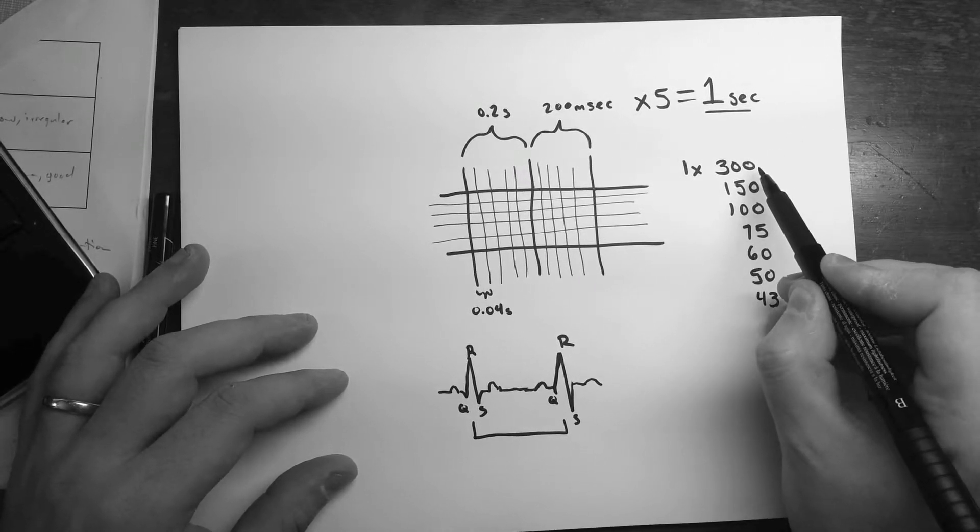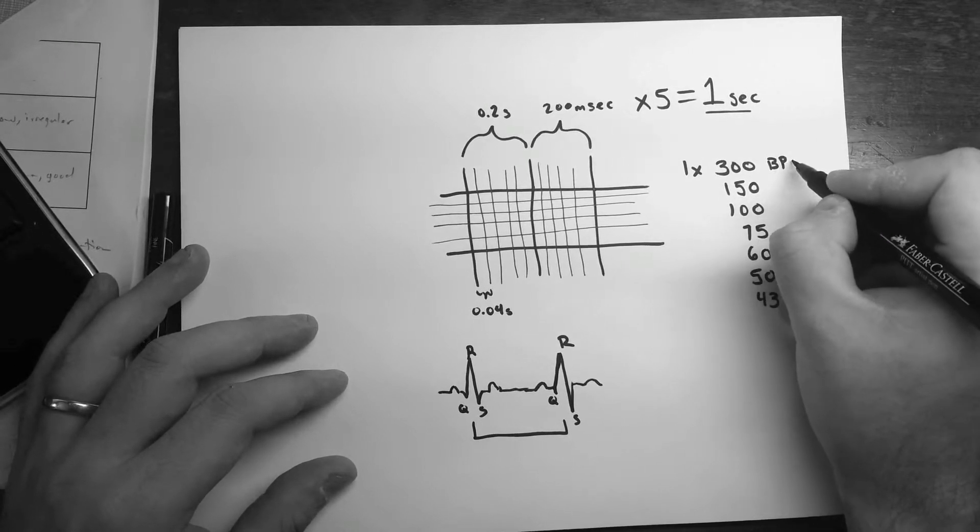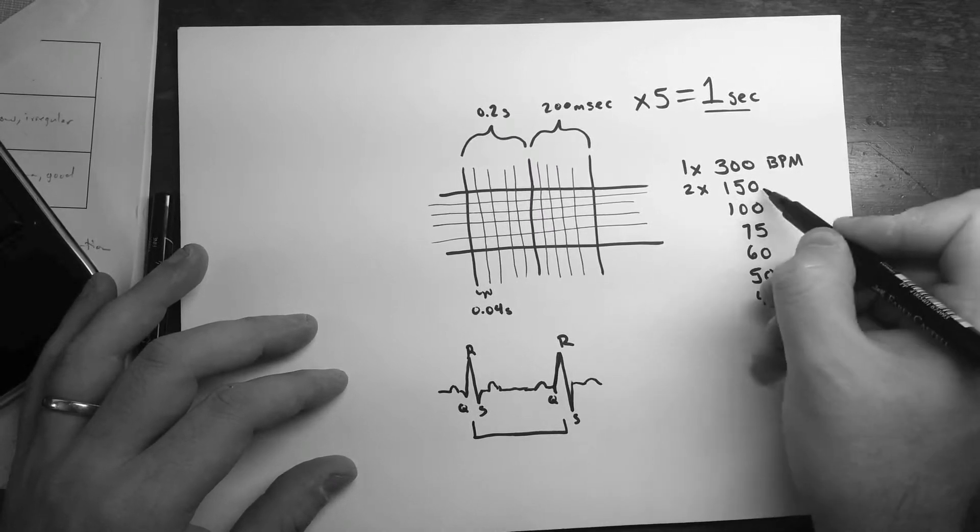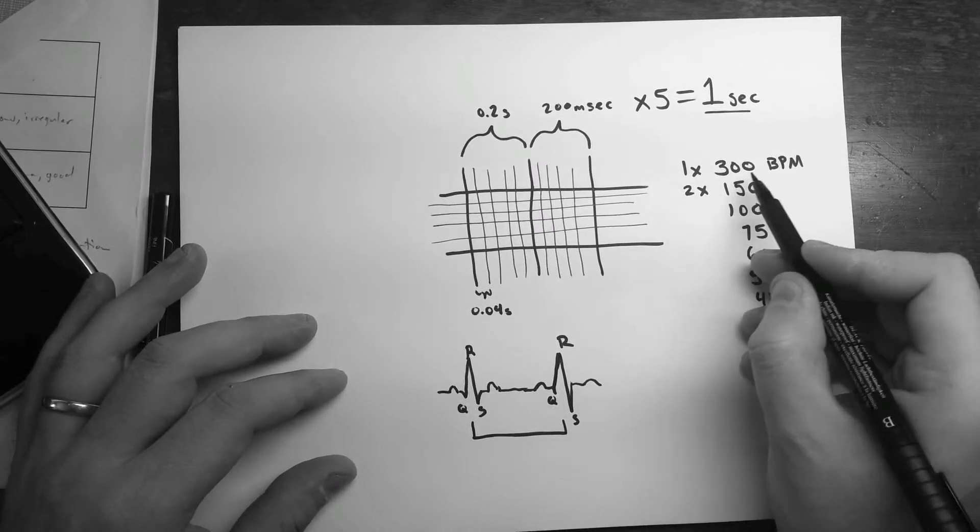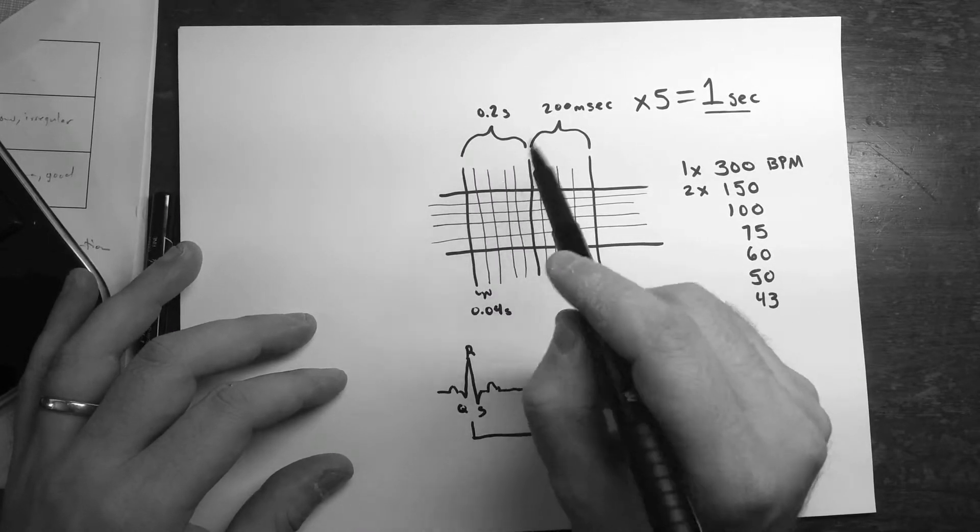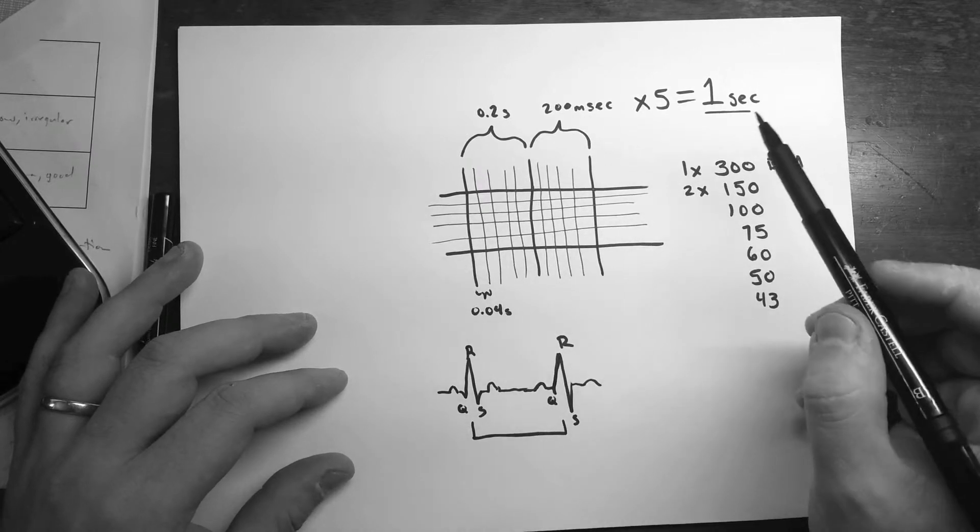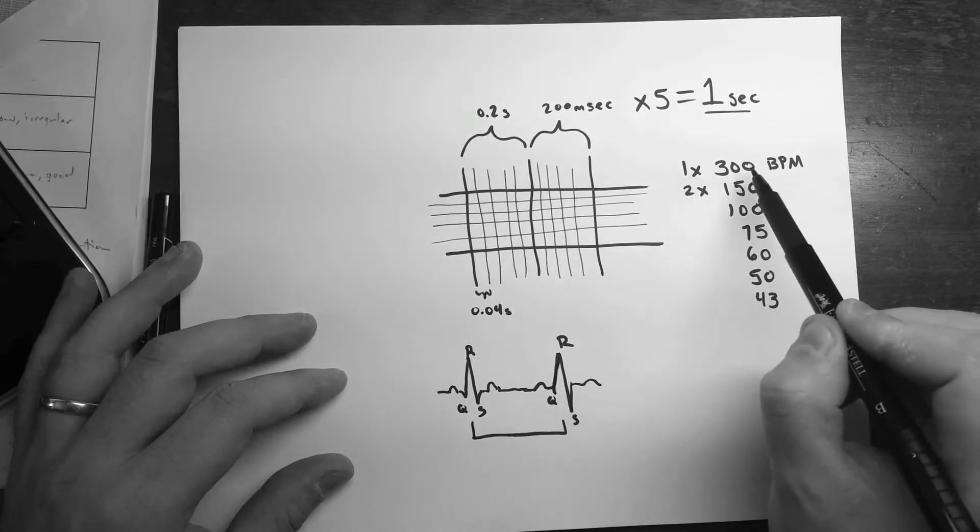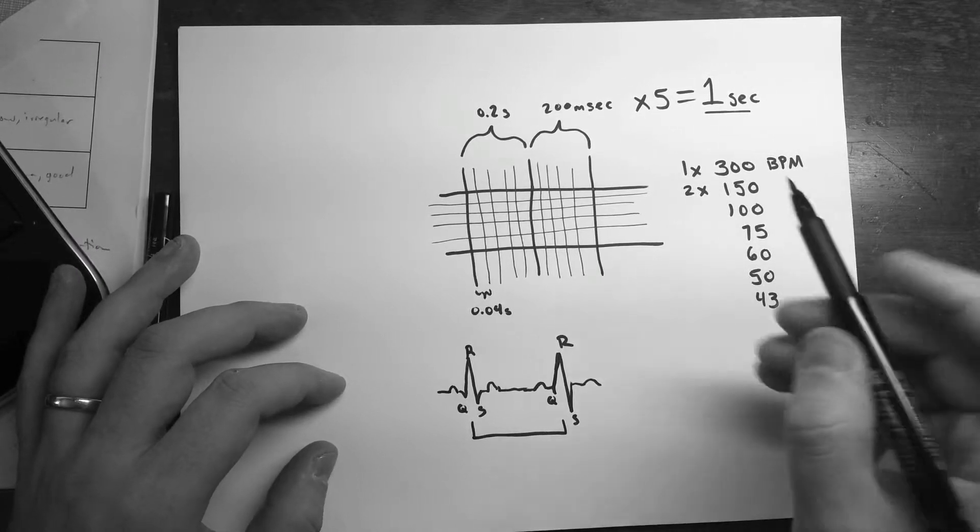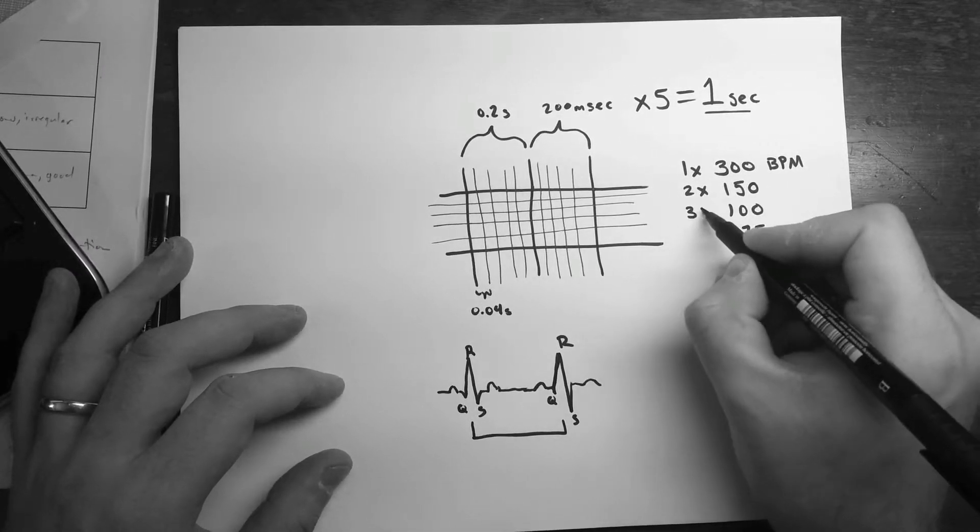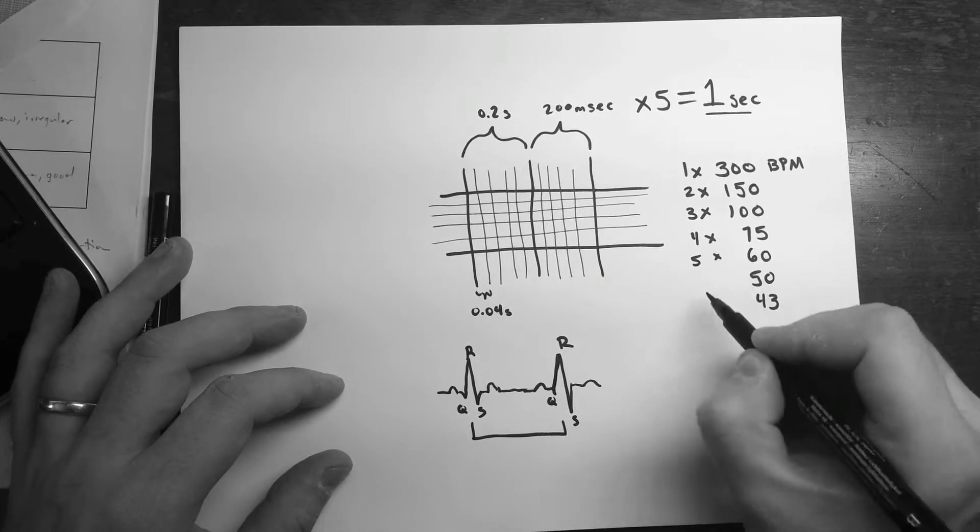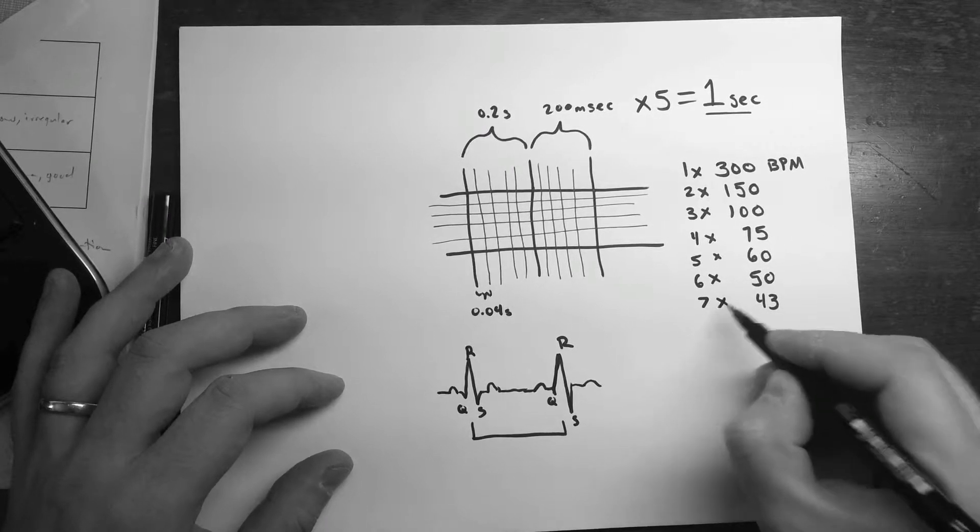Then you've got a rate of 300 beats per minute. If it's two boxes apart, it's 150. Now if it's somewhere in between there, you can kind of break up into these fine gradations here however you want. There's plenty of books that will tell you how to do that. But in general, if you just eyeball it, if it's 300, that person's in some serious need of some help. If it's 150, that's still pretty high. Three boxes is 100, four is 75, five is 60, six is 50, and seven is 43.